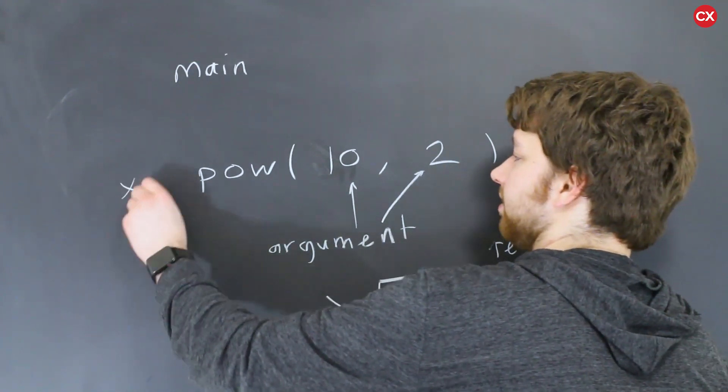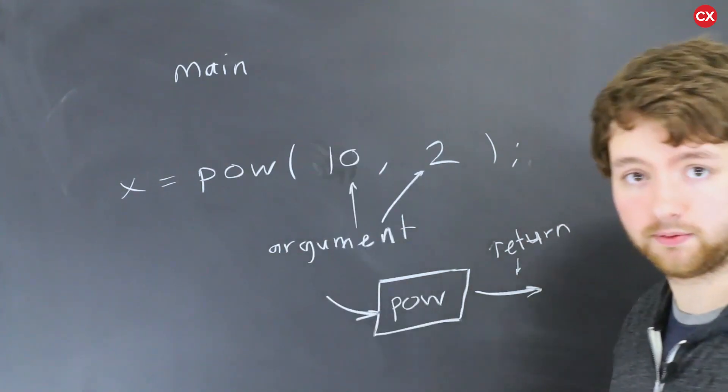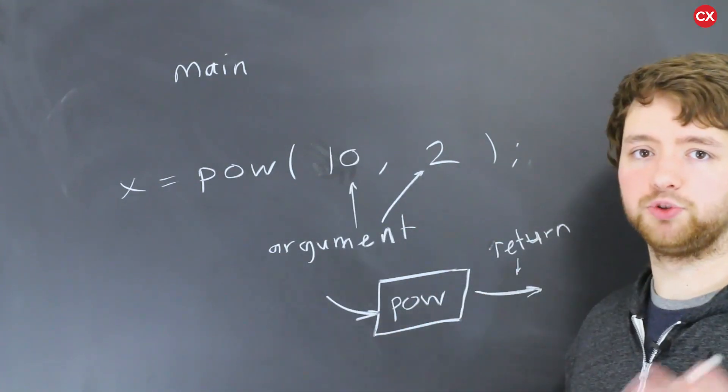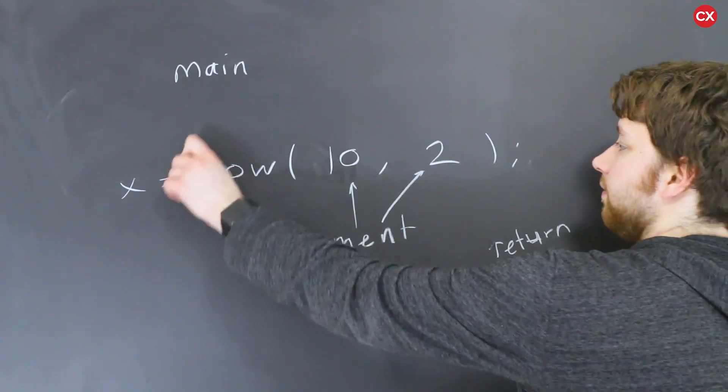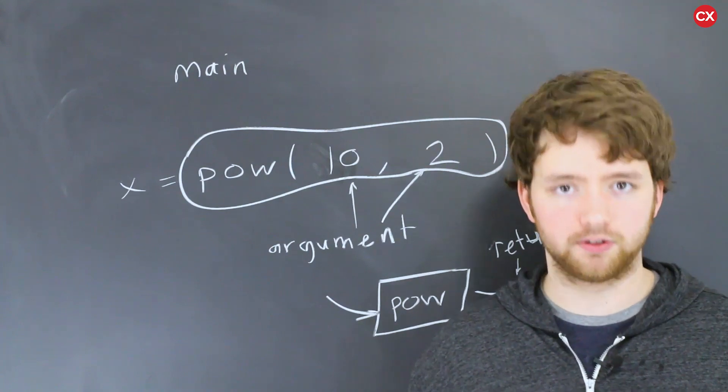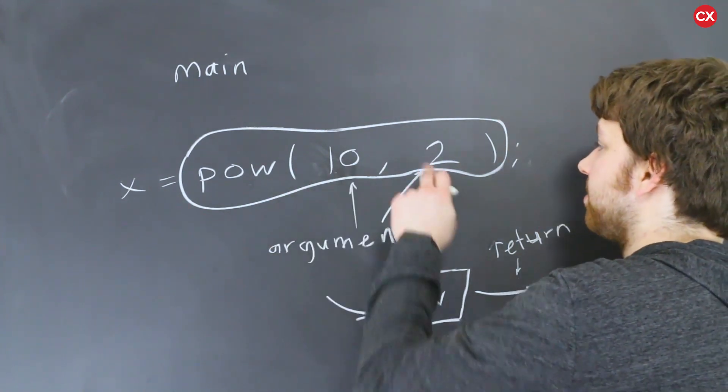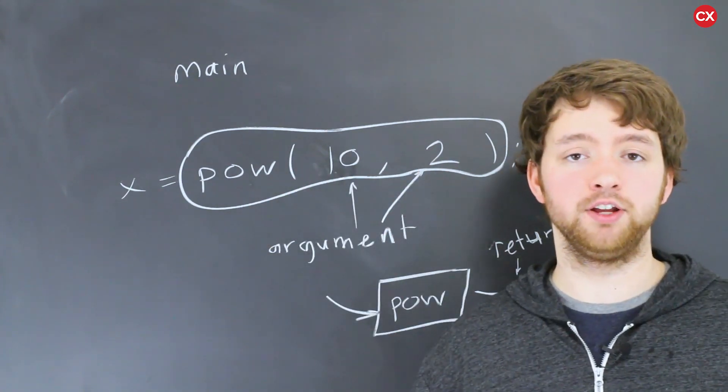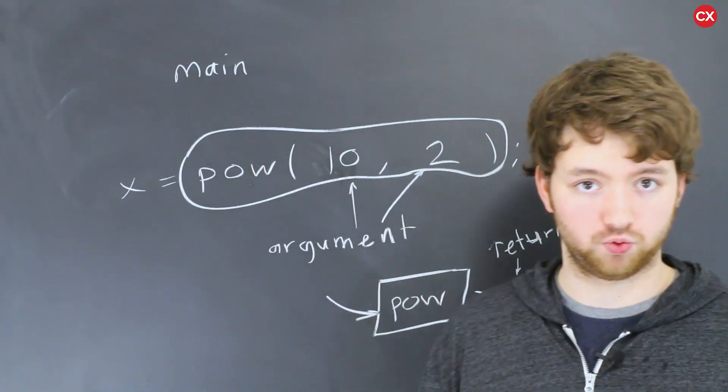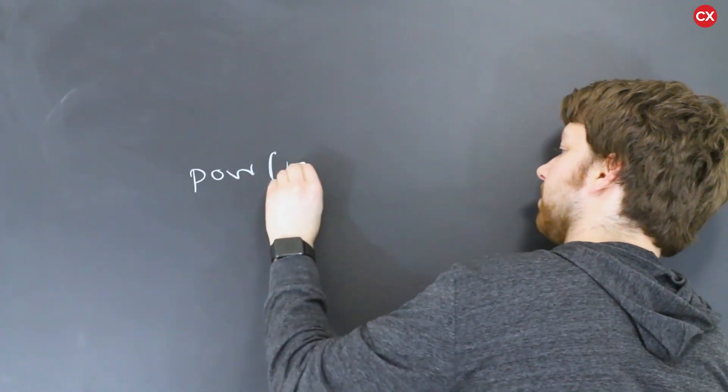So for example, we could assign that to some variable we declared earlier. So in most situations, yes, there's going to be a semicolon, but you are able to use this function inside of a larger expression. So 10 to the second power, 10 times 10 is 100. What if we wanted whatever this returned times two? In that situation, we would have something like this.